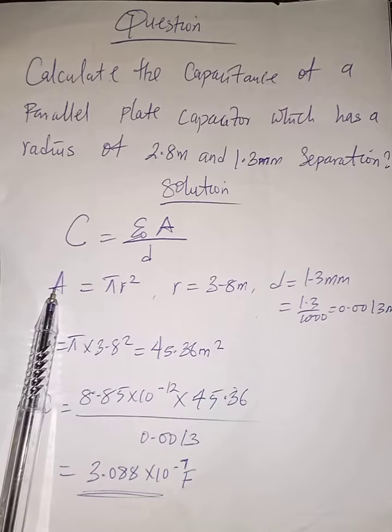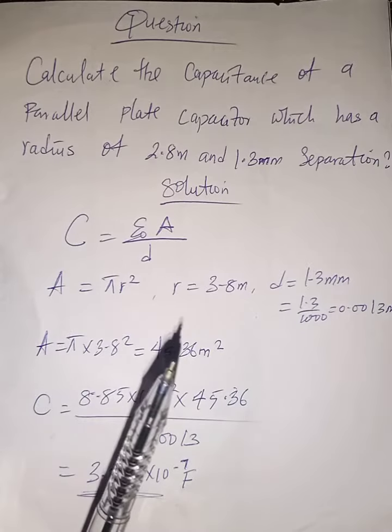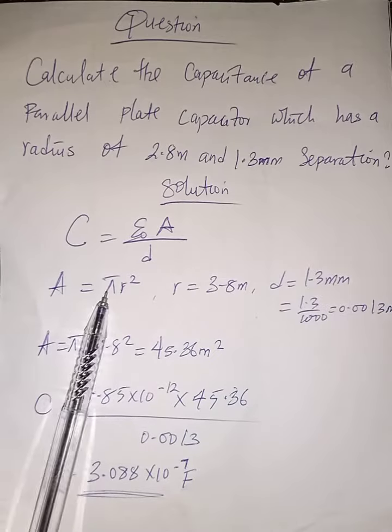Since the plates have a radius, that means we have circular plates here. Since we have radius, the area of a circle is πr².